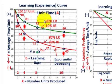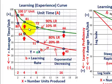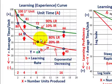The 90% learning rate is not as good as the 80%, because with a 90% learning rate you only have a 10% improvement rate. That is, every time you double your output, you only decrease your average time per unit by 10%. With 80%, you're reducing your average time on a per-unit basis by 20% each time you double output.